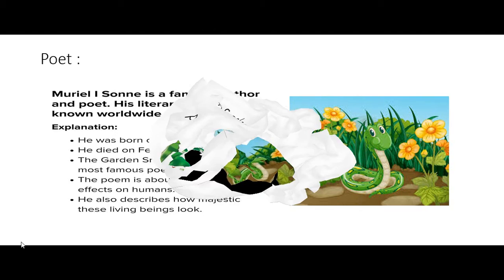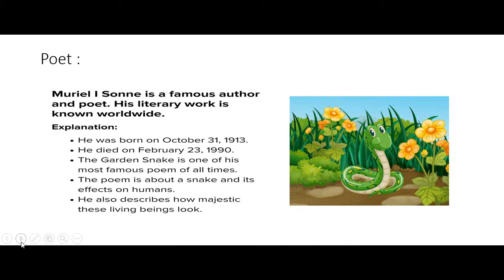Before we start understanding this poem in detail, let us know about the poet. Not much is known about this poet, but he was born on October 31st, 1913 and died on February 23rd, 1990. The poem 'Garden Snake' is one of his most famous poems of all time. This poem is about a snake and its effects on humans, and he also describes how majestic these living beings look.